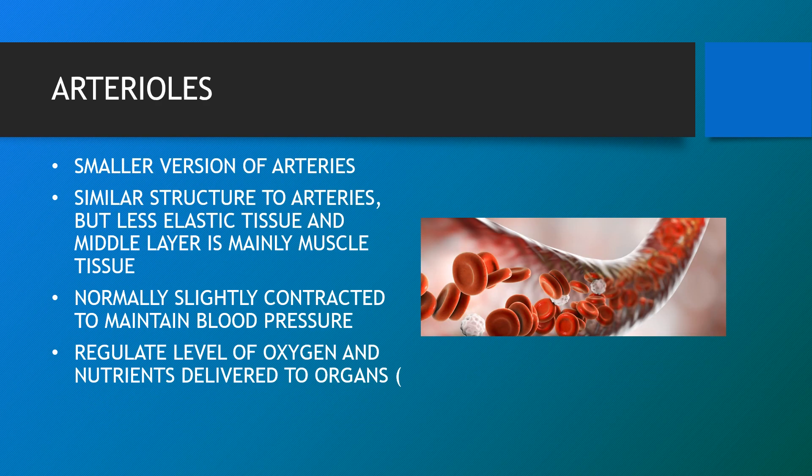Arterioles are small blood vessels that are smaller than arteries but larger than capillaries, found all over the body. Since they connect arteries and capillaries, they have an influence on blood pressure and the speed at which blood flows through the vessels. Arteries transport blood away from the heart and branch into smaller arterioles. Arterioles distribute blood to capillary beds — the sites of exchange with the body's tissue — and are normally slightly contracted to maintain blood pressure, delivering regular levels of oxygen and nutrients to organs. They dilate when more nutrients or oxygen is required, for example during exercise.